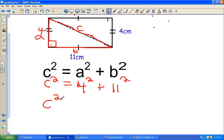So continuing to work it out. 4 squared, or 4 times 4 is 16. 11 squared, or 11 times 11 is 121.